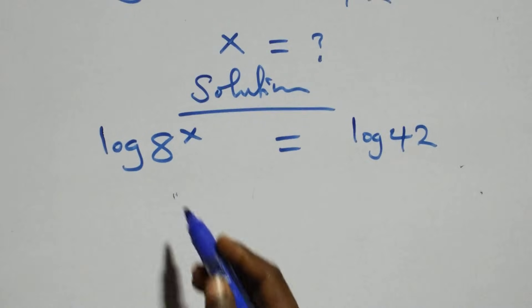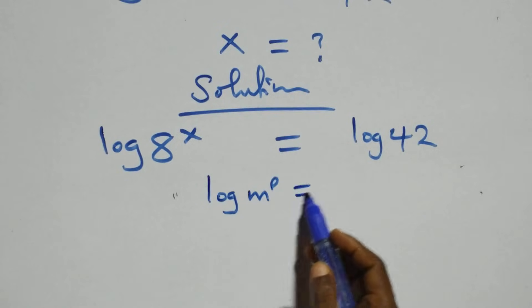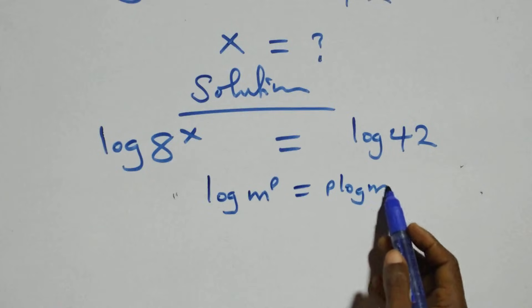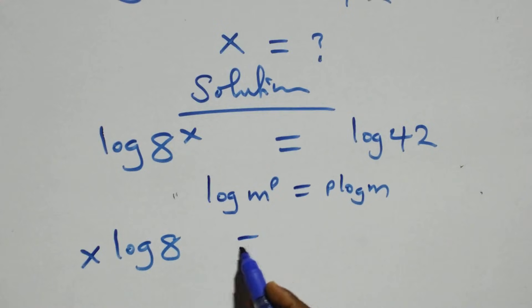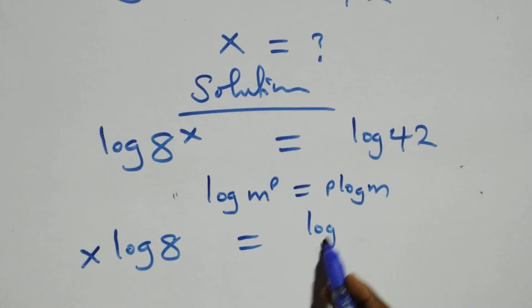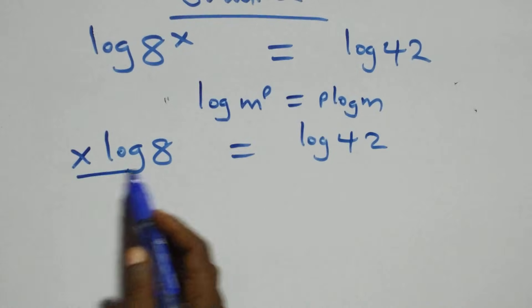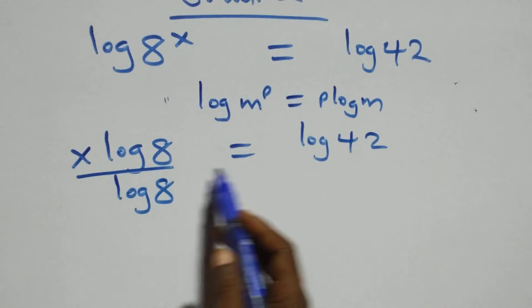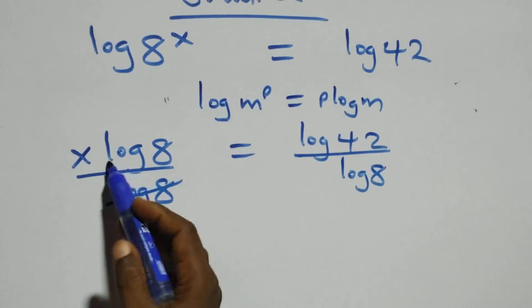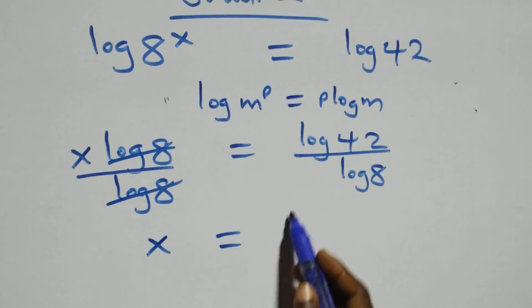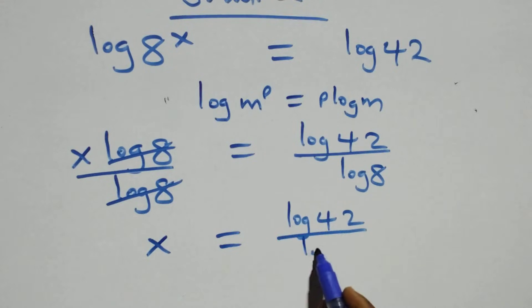Here we apply the power rule of logarithms, where log m raised to power p is the same thing as p log m. At this step we have x log 8 equals to log 42. Next, divide both sides by log 8 — log 8 cancels and we have x equals to log 42 over log 8.